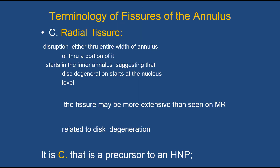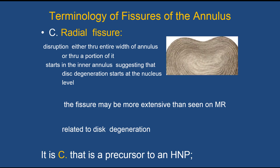The important one is the radial fissure — a disruption through the entire width of the annulus, or through a portion of it. These usually start in the inner portion of the annulus, suggesting that degeneration begins at the level of the nucleus pulposus and works outward. The fissure may actually be more extensive pathologically than is seen on MR, as shown in many post-mortem studies. This fissure is a precursor to a herniated disc. You can see how this fissure allows nuclear material to herniate out into the spinal canal.